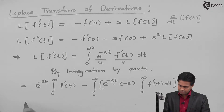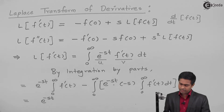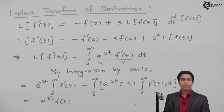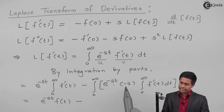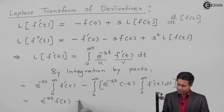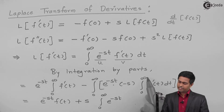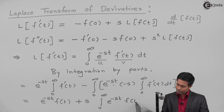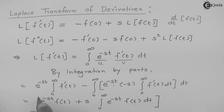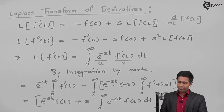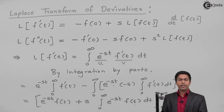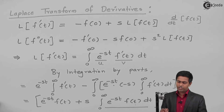Evaluating this: e^(−st) times f(t) — since the integral of f'(t) is f(t) — and taking the constant (−s) outside gives plus s times the integral from 0 to infinity of e^(−st)·f(t) dt, with the limit from 0 to infinity. The second term matches exactly the definition of Laplace transform, so it equals Laplace of f(t).